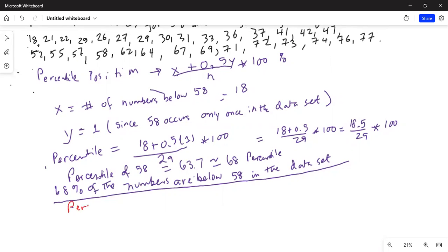The percentile position is x plus 0.5 y divided by n, whole thing is multiplied by 100 percent. So here, how many numbers are below 25? Percentile position for 25 in the data set.